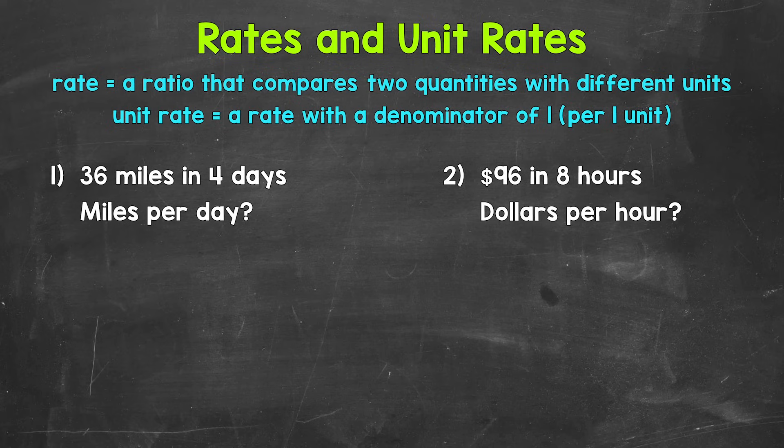Let's jump into our examples and see exactly what this means. Starting with number 1, where we have 36 miles in 4 days. For example, let's say that someone rode their bike 36 miles in 4 days. This rate compares and shows the relationship between the number of miles ridden and the days that it took to do so. So two different units of measure: miles and days.